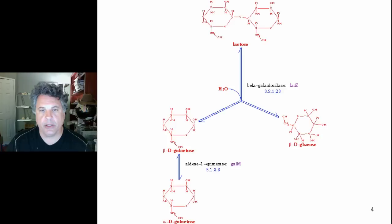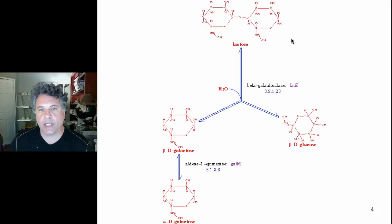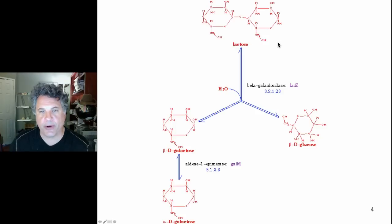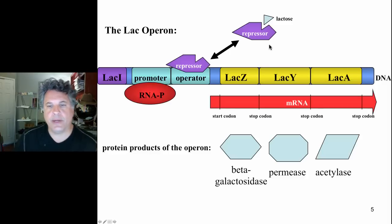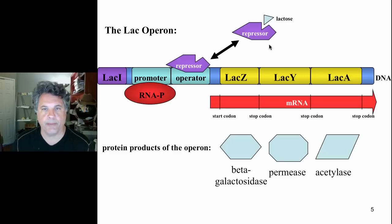We're going to look at the model for regulation of the lactose operon, which encodes proteins responsible for the utilization of lactose as a food source. We will then look in some detail at the experiments of Jacob and Monod — Nobel Prize-winning experiments — which revealed the mechanism of the genetic switch for turning the operon on when lactose is present and off when lactose is absent.